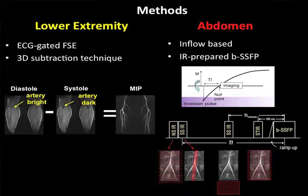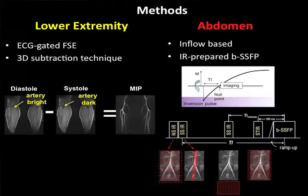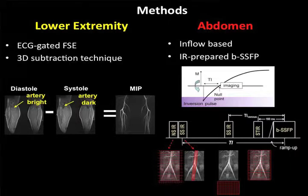We've done a small study in patients with the abdominal technique, and we're getting a very high negative predictive value on the order of the 98th percentile. However, the technique tends to overestimate stenosis. So there are still things to be done, but I think we have something that works clinically, even though it has a somewhat high false positive rate.